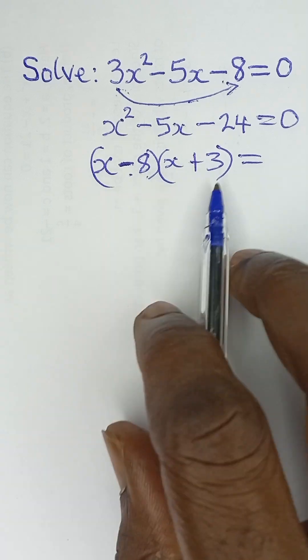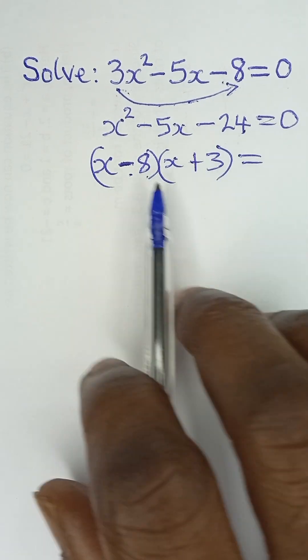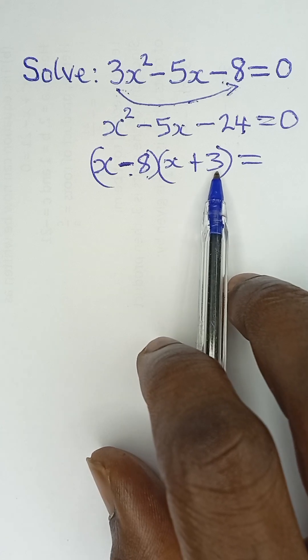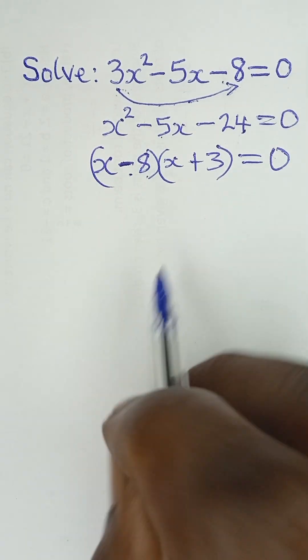So that negative 8 multiplied by positive 3 will give us negative 24. And when the negative 8 added to positive 3 will give us negative 5. And that will be equal to 0.